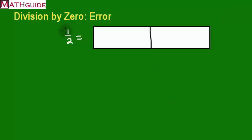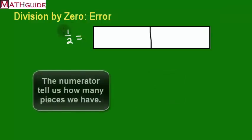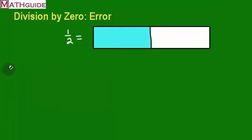And it says we have one of these. So what that means is we are going to shade one of those. There you go. That's what one-half looks like. Pretty simple enough, right?